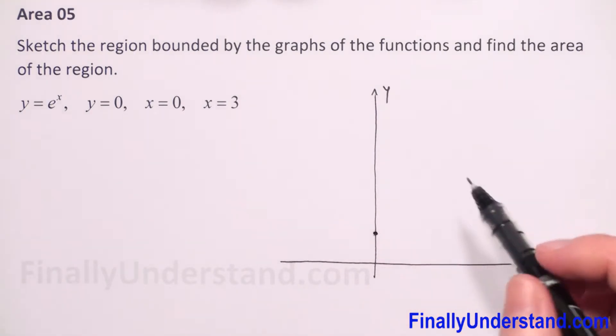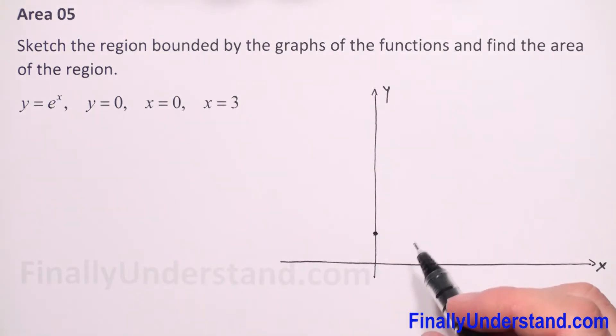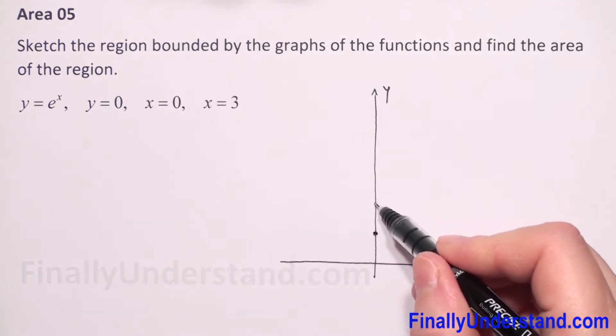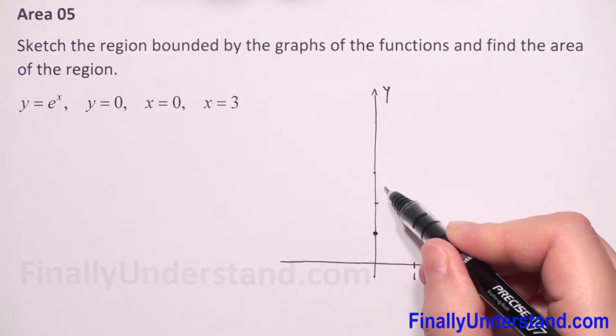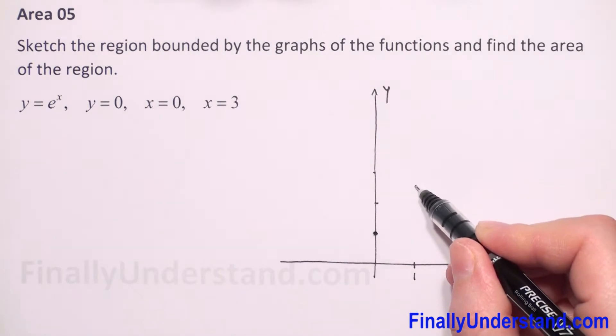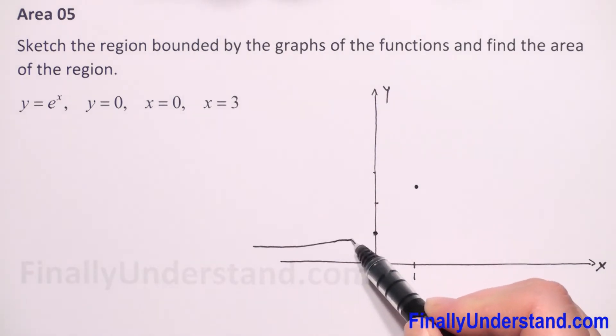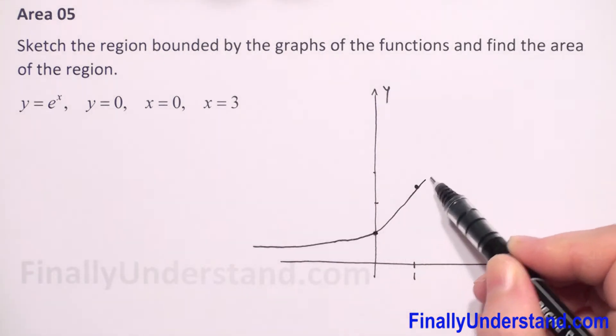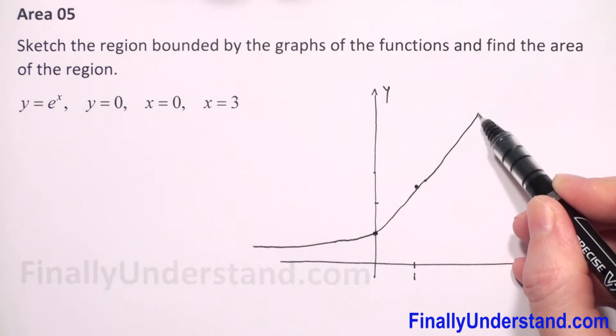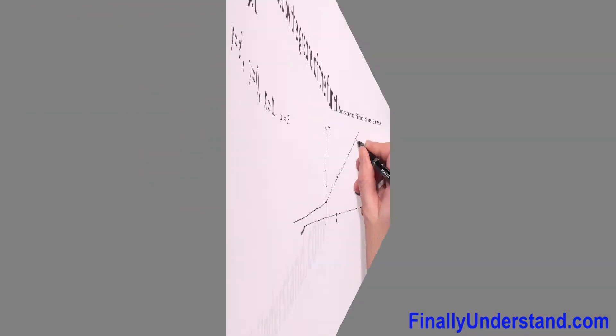Next, let's put x equals one. E to power one will be two point something, so approximately we put this point here. Our graph looks like this, it's going to positive infinity. This is our y function e to power x.